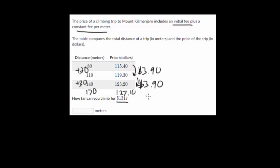And then if I add another $3.90, that extra $3.90 would take me to $131. And so if I add another 30 over here so that it corresponds with that jump of $3.90 in your price, that brings you up to 200 meters.